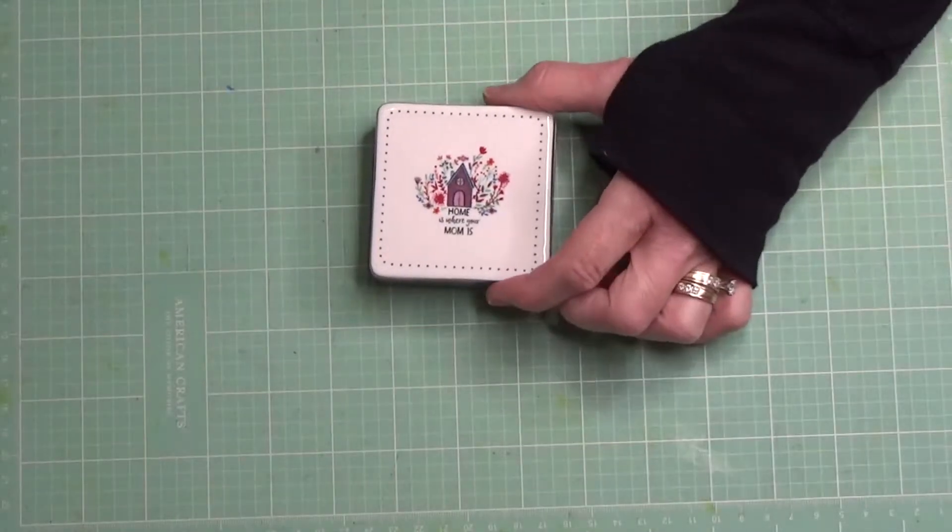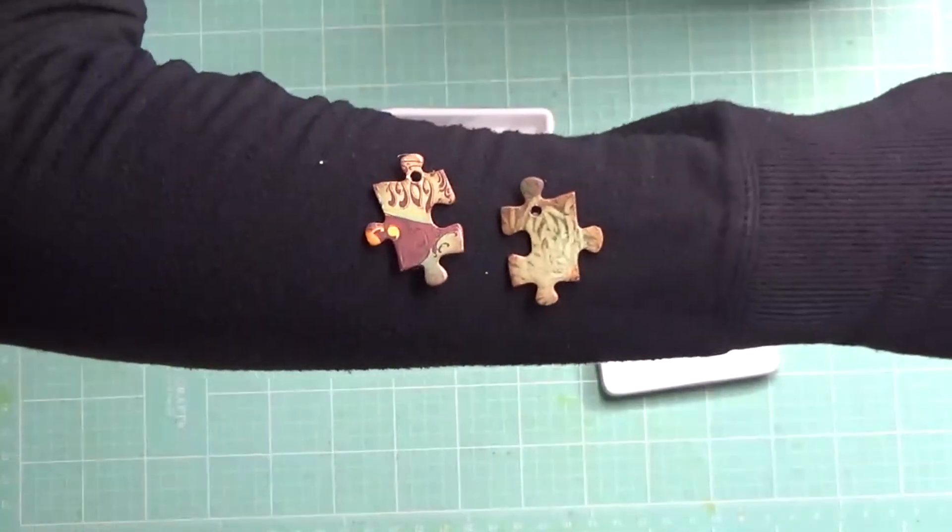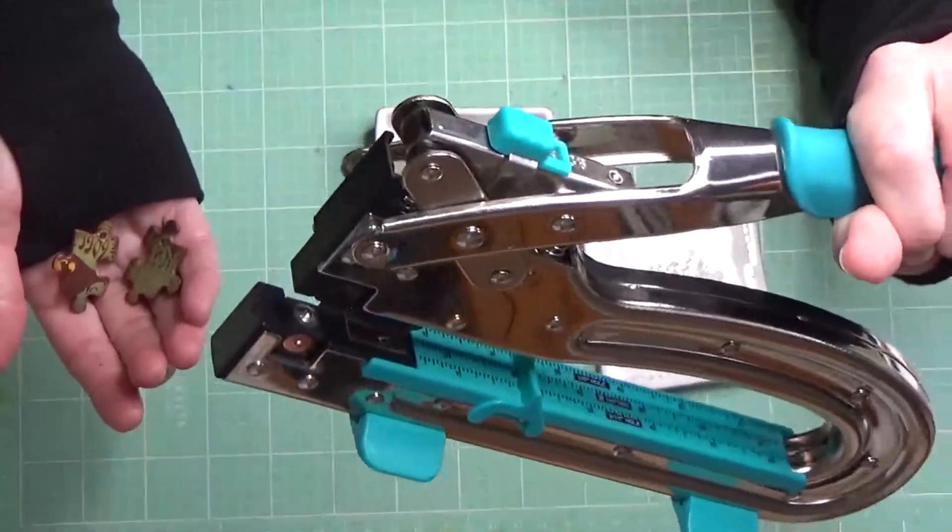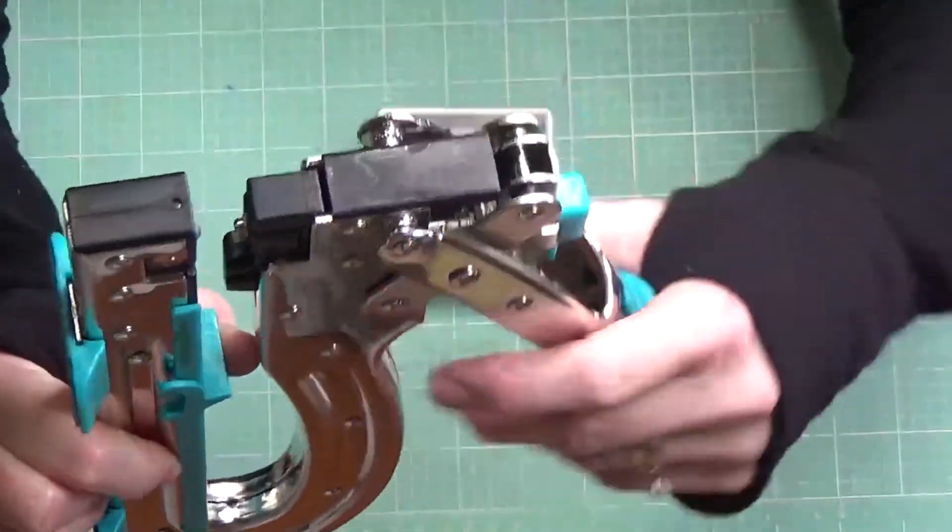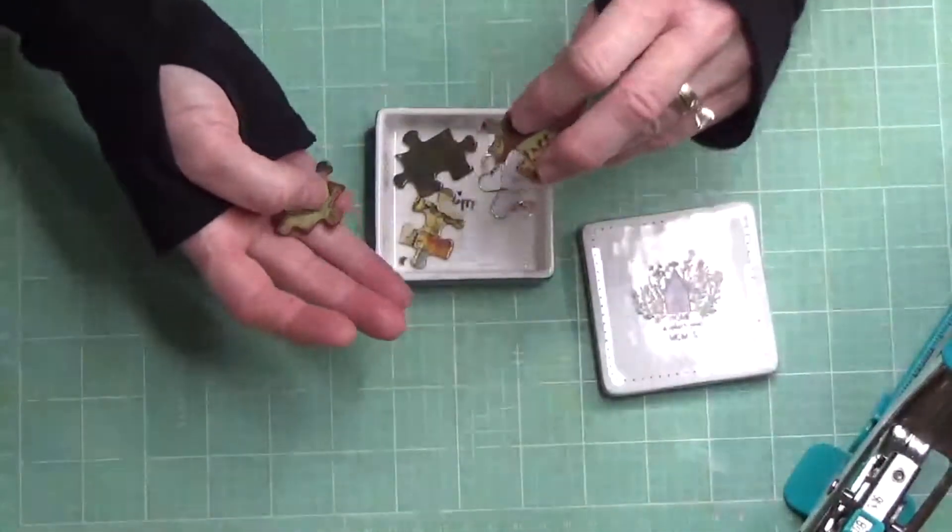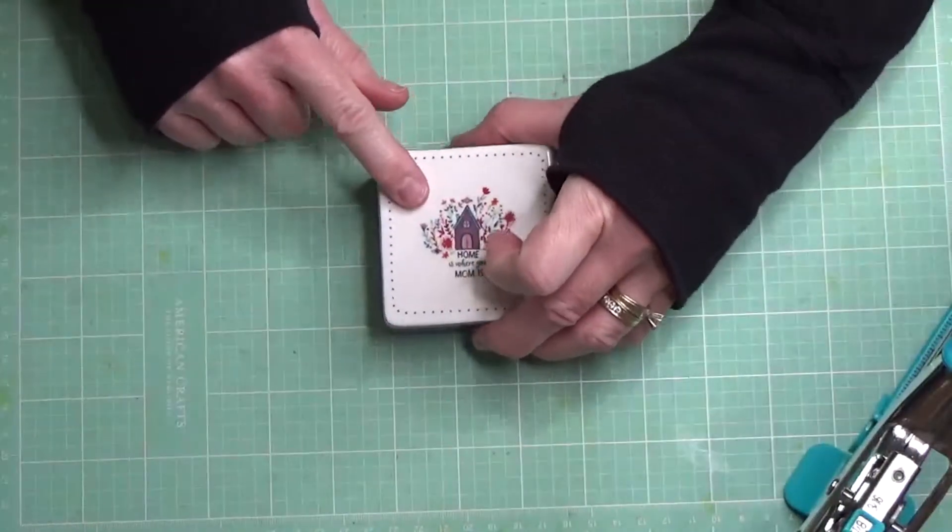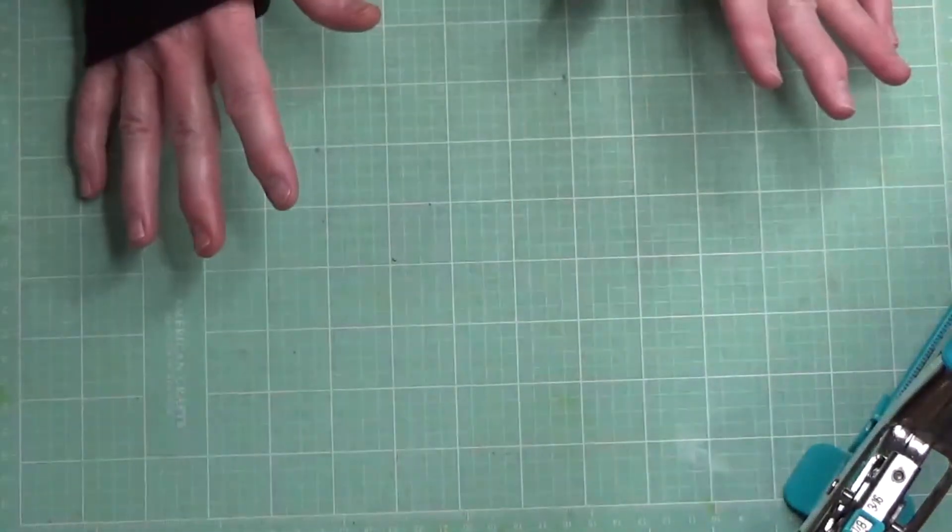Next is some altered puzzle pieces. Using my We Are Memory Keepers Crop-A-Dial, I used the 1/8th punch. I punched out a little hole and we're going to make these into earrings. I want to show you the last thing that you can do with things that are free or almost free.